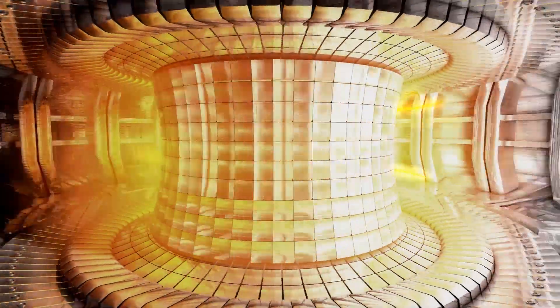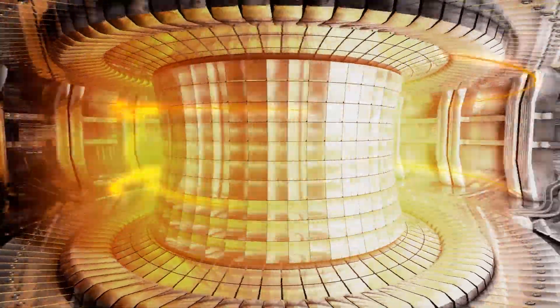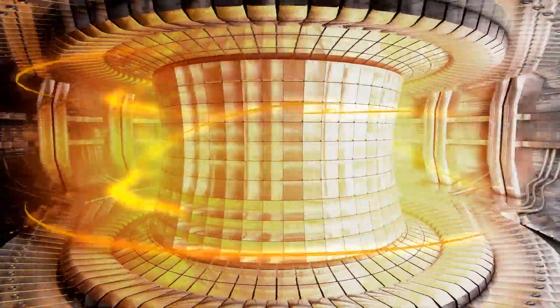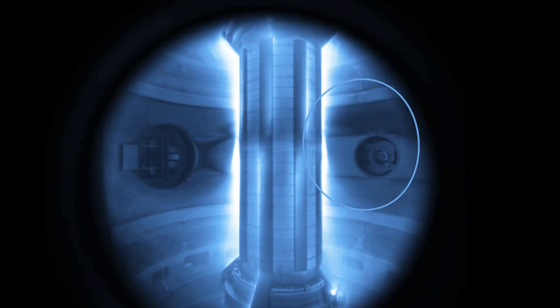The hot plasma is kept away from the walls of the tokamak by a magnetic field produced primarily by two sets of coils that contain the plasma horizontally and vertically. Fast control systems can change the magnetic field produced by these magnets to keep the plasma trapped and stable.